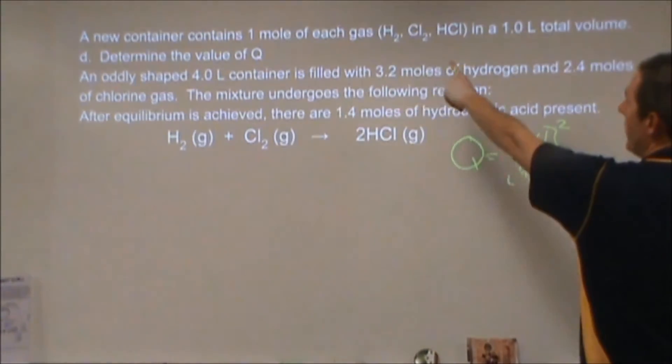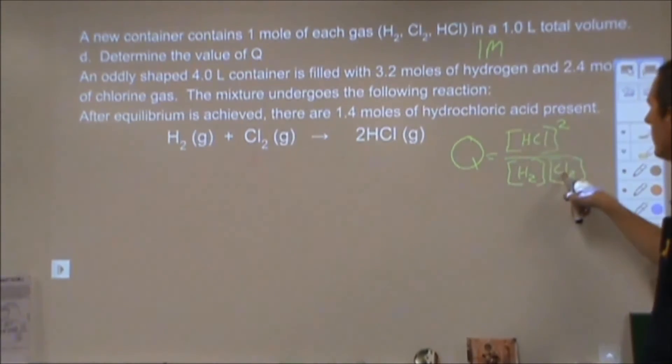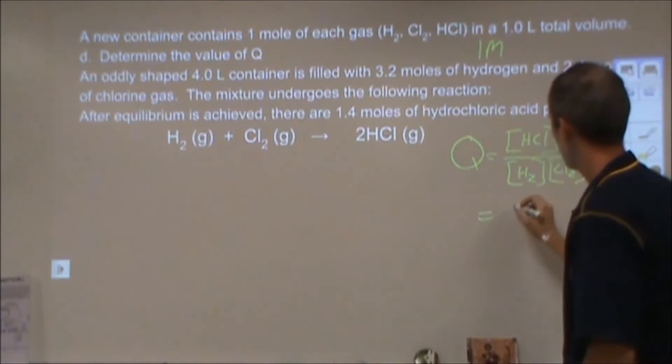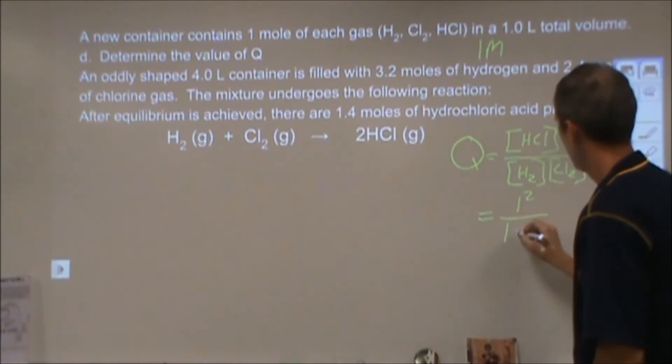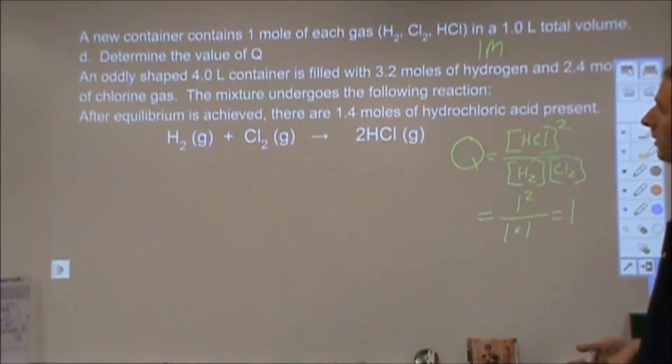Now I have one mole of each gas in a one liter container, so I have a one molar concentration for each of these three things. So I get one squared over one times one, which equals one, so Q is one. And that's all it asks me to do for part d to determine the value of Q.